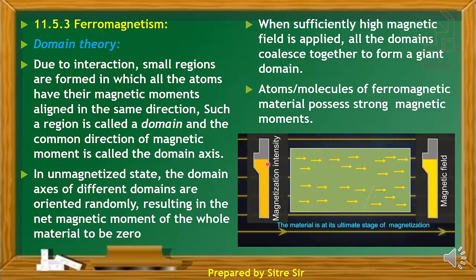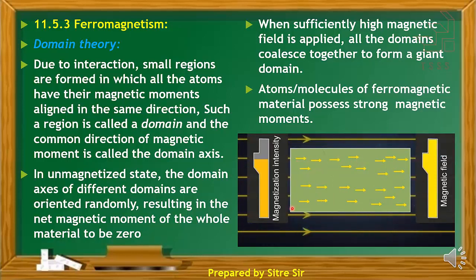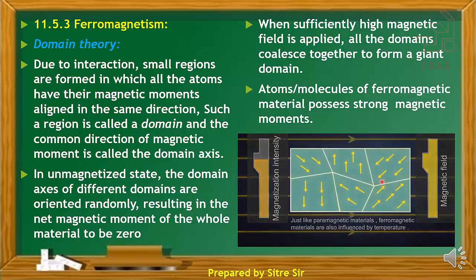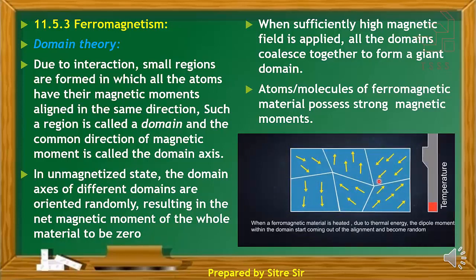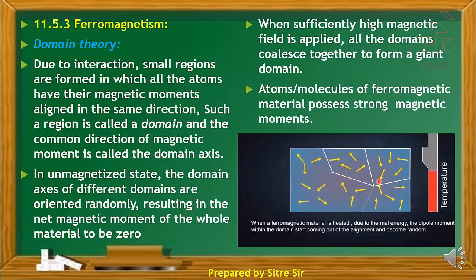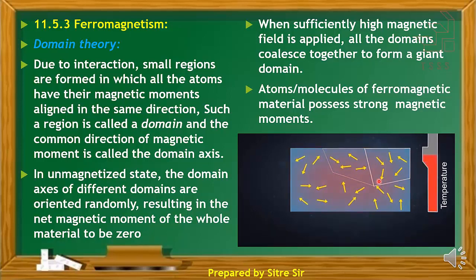Under a strong magnetic field, the domain structure is destroyed and the atoms and molecules align their dipole moments along the field direction. At saturation magnetic field, all domain regions are fully aligned. The substance shows strong magnetic properties. However, at higher temperatures, the domain structure breaks down and the substance loses its magnetic properties.